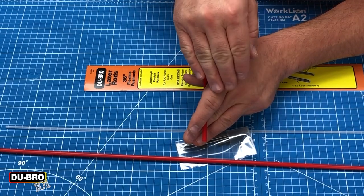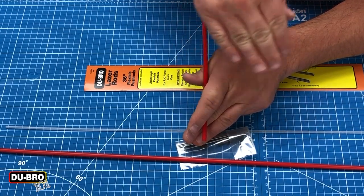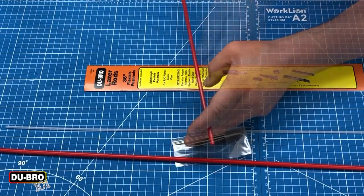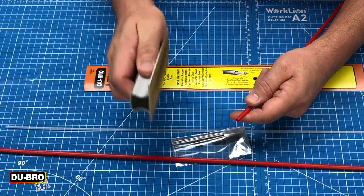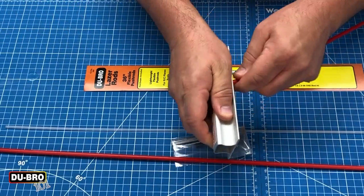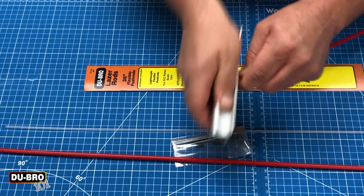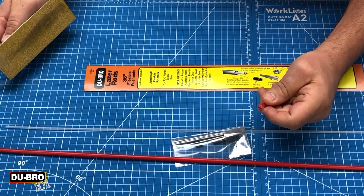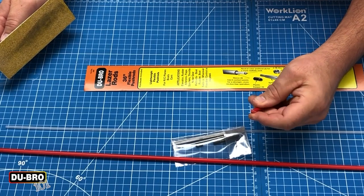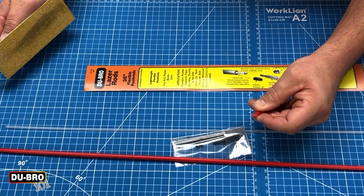After you trim it, you don't have to trim it completely flush. You can also sand these. As a brief demonstration, I'll use a sanding bar and you can see it sands really quite easily. There's a little bit of cleanup you'll have to do afterwards, but it does sand so you can get it perfectly flush with your model.